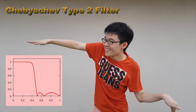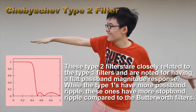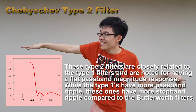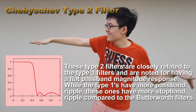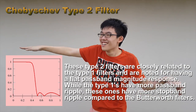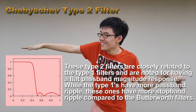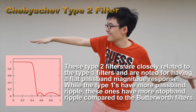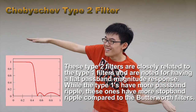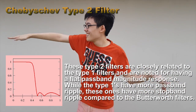The third type of filter is the Chebyshev type 2 filter. These type 2 filters are closely related to the type 1 filters and are noted for having a flat passband response. While the type 1 has more passband ripple, the type 2 has more stopband ripple when compared to Butterworth filters. These filters have a variety of applications in the biomedical area, such as removing specific power line frequencies and allowing only a desirable frequency range to pass.